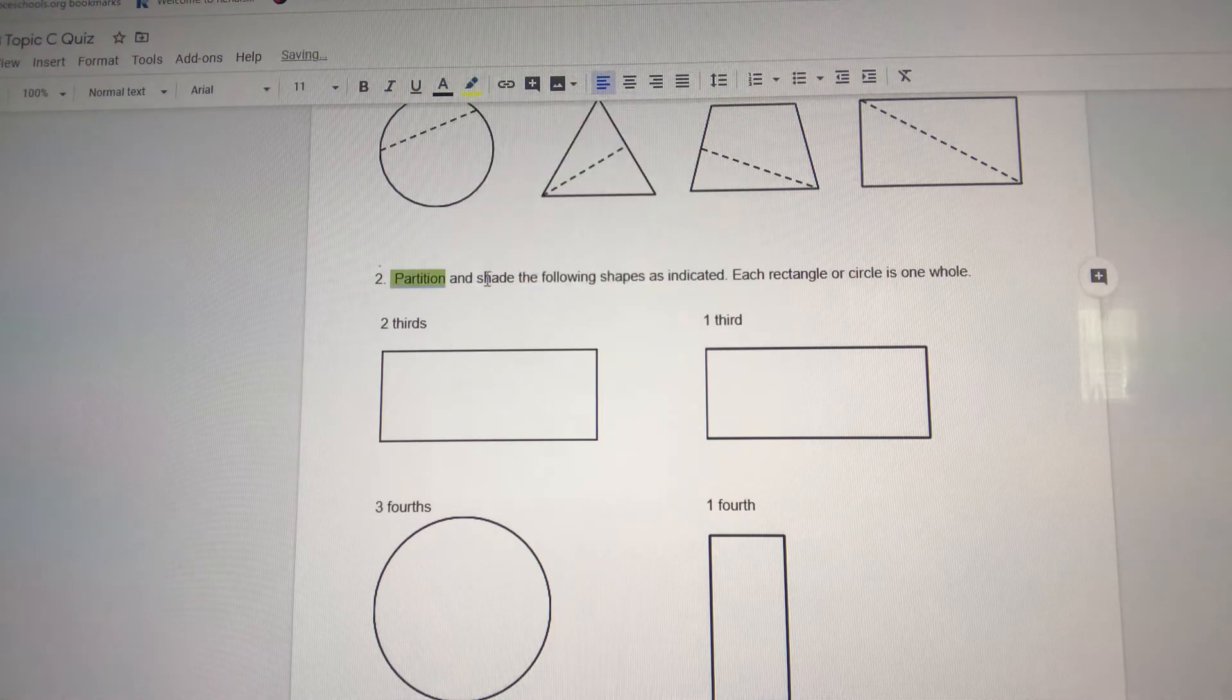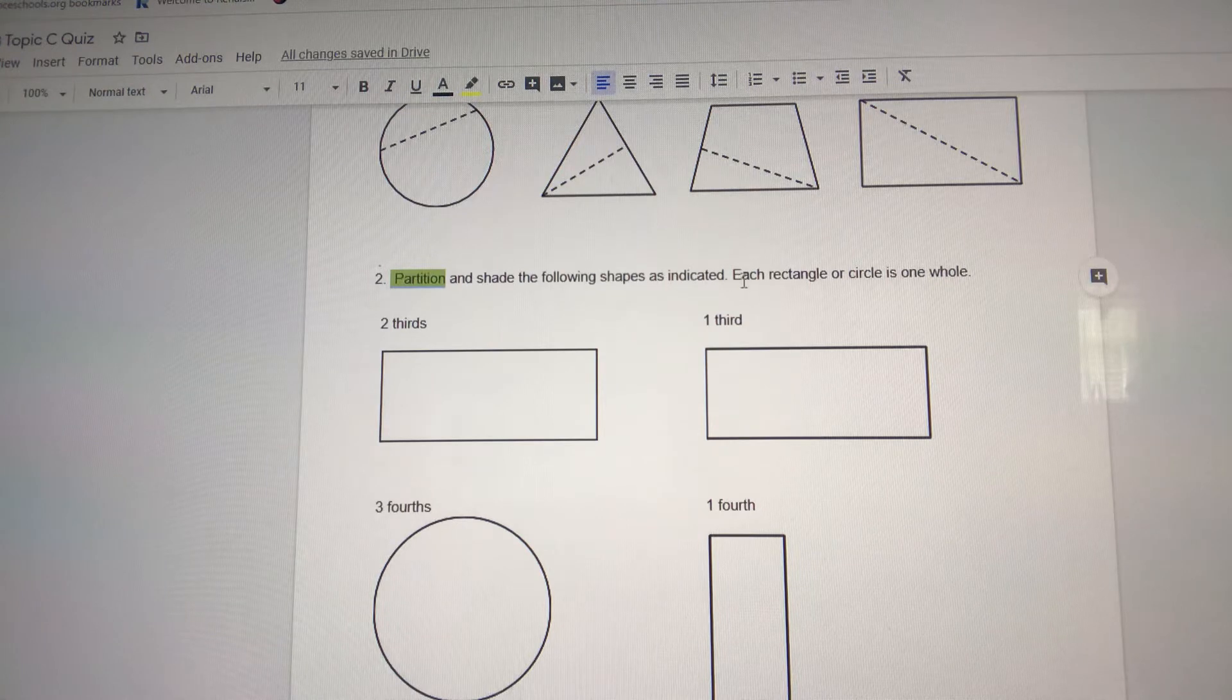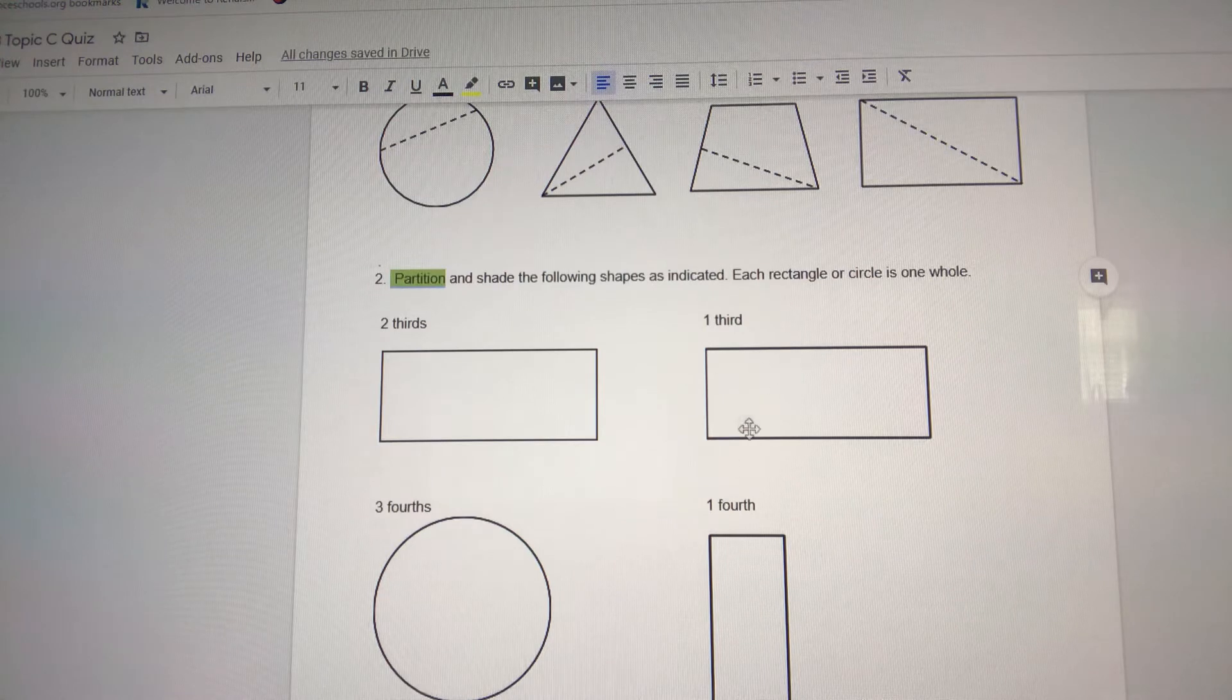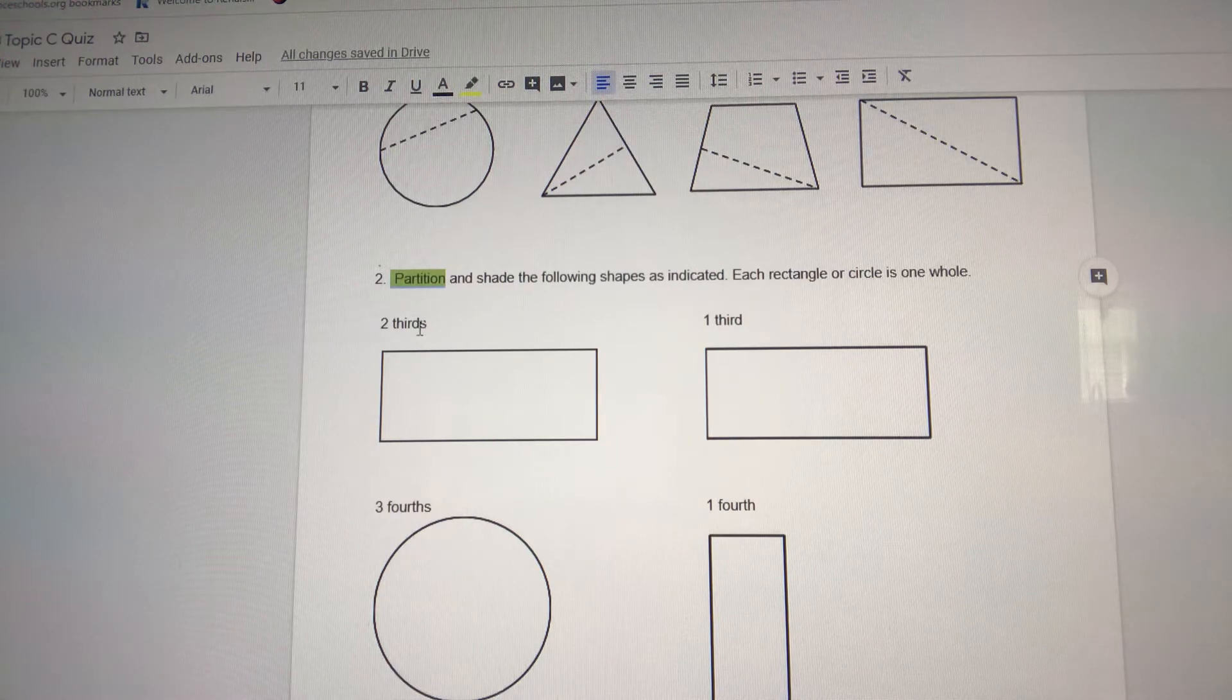Partition and shade the following shapes as indicated. Each rectangle or circle is one whole. This is one whole, this is one whole, this is one whole, and this is one whole.